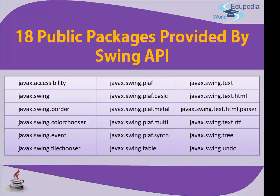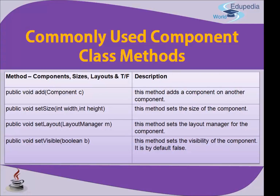Now that we are aware of these 18 packages provided by the Swing API, moving on to the next slide about the commonly used component class methods. These methods are included to help you understand how to create or instantiate objects — for example, if you want to add something, set the size for a particular area, or check the space available, you need to know about these methods.